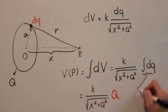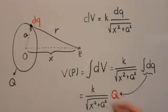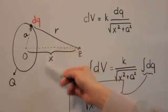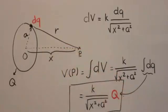When we integrate this, we get this result. This is the final answer for the electric potential at point P due to the ring carrying the charge Q.